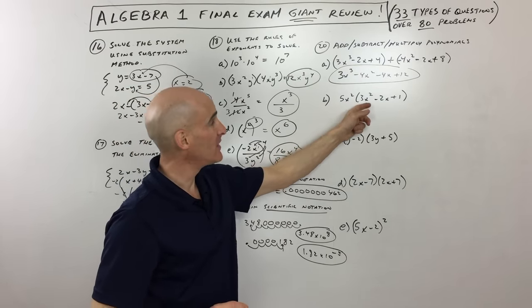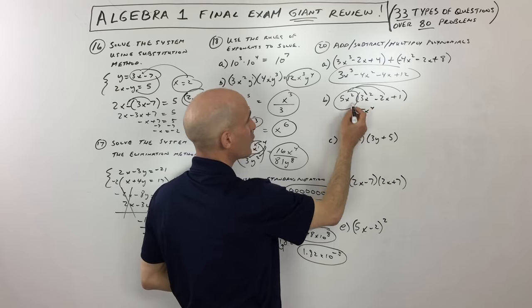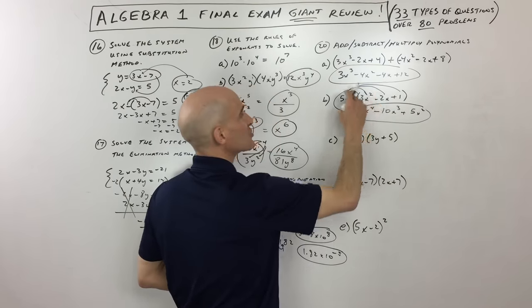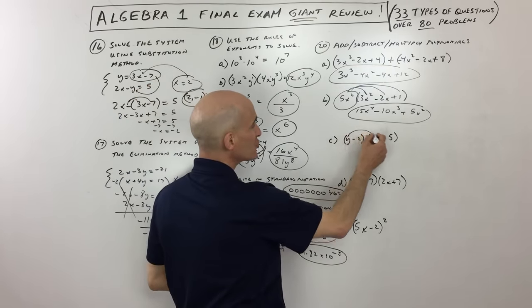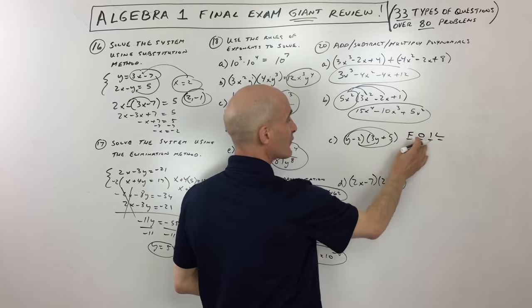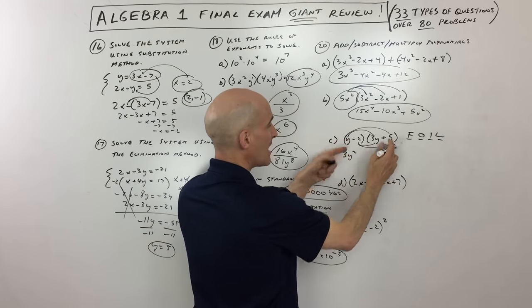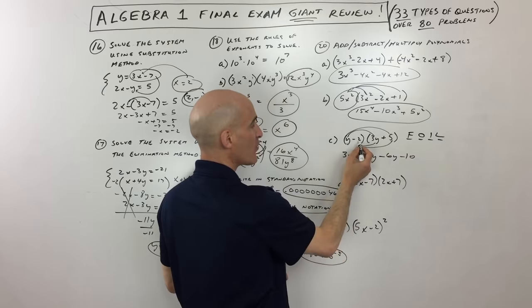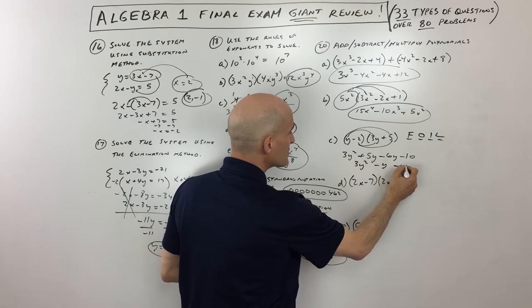For multiplying a monomial times a trinomial, distribute 5x squared to each term: 15x to the 4th minus 10x cubed plus 5x squared. For a binomial times a binomial, use FOIL — first, outside, inside, last — or the distributive property twice. First terms give 3y squared, outside gives 5y, inside gives negative 6y, last gives negative 10. Combining like terms: 3y squared minus y minus 10.